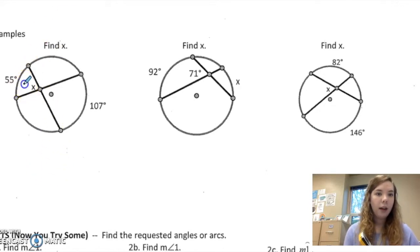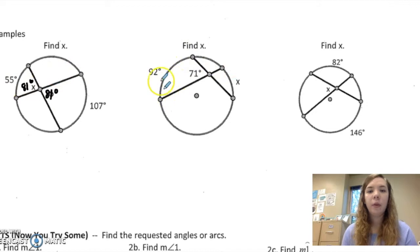So x is 81, which makes this angle 81 also. Alright, over here. I'm missing one of the end pieces. So I'm going to go ahead and do 92 plus x over 2